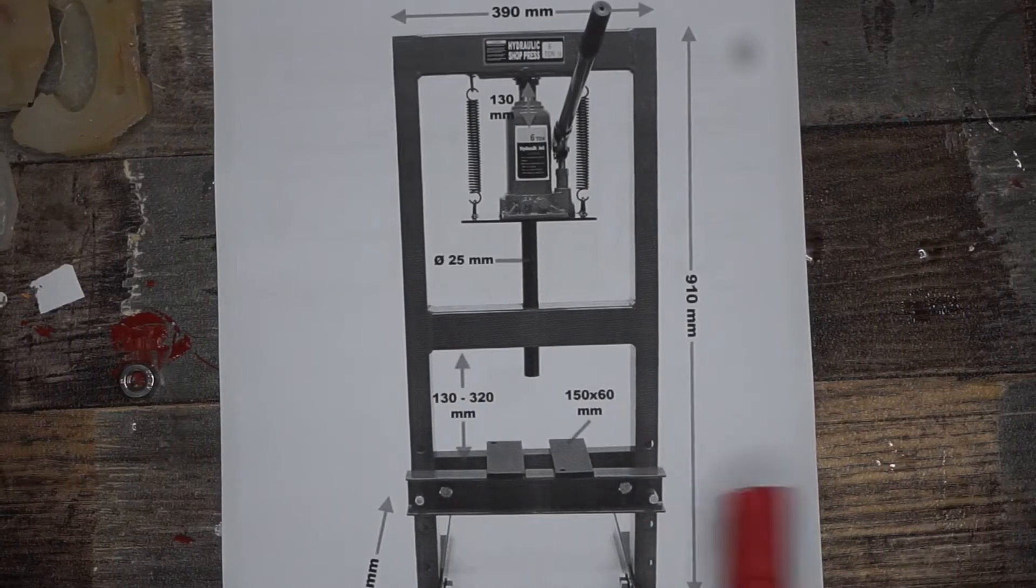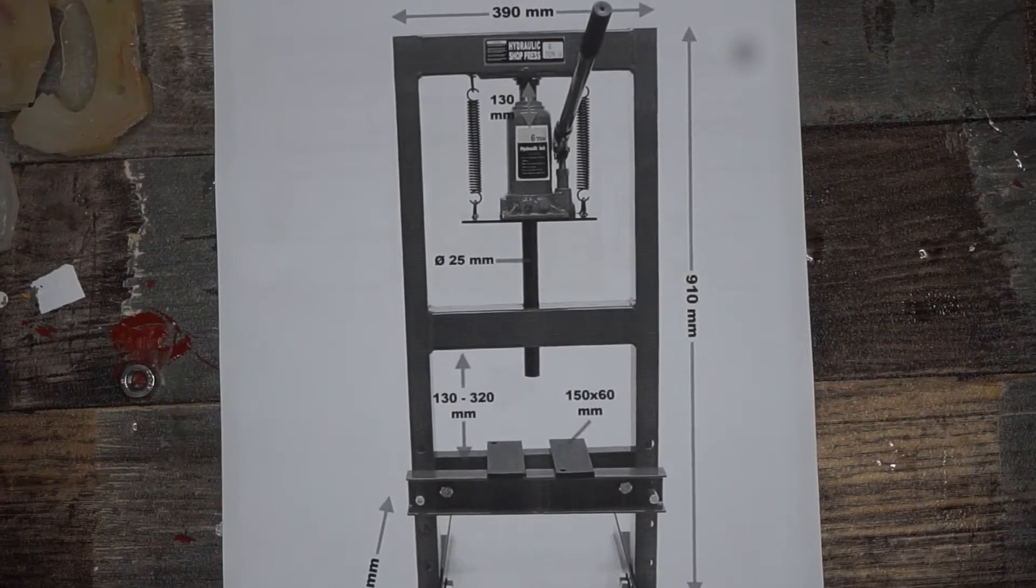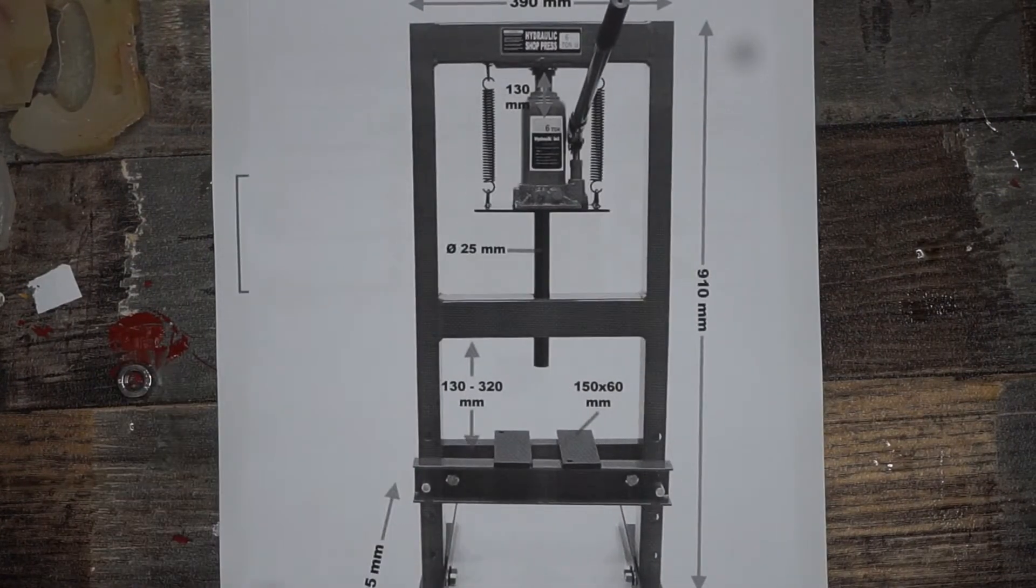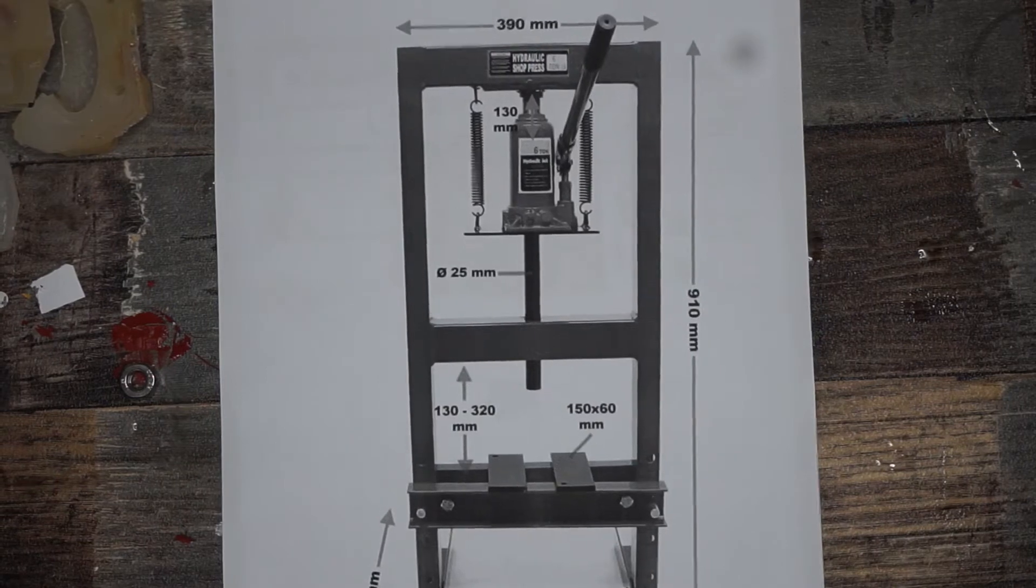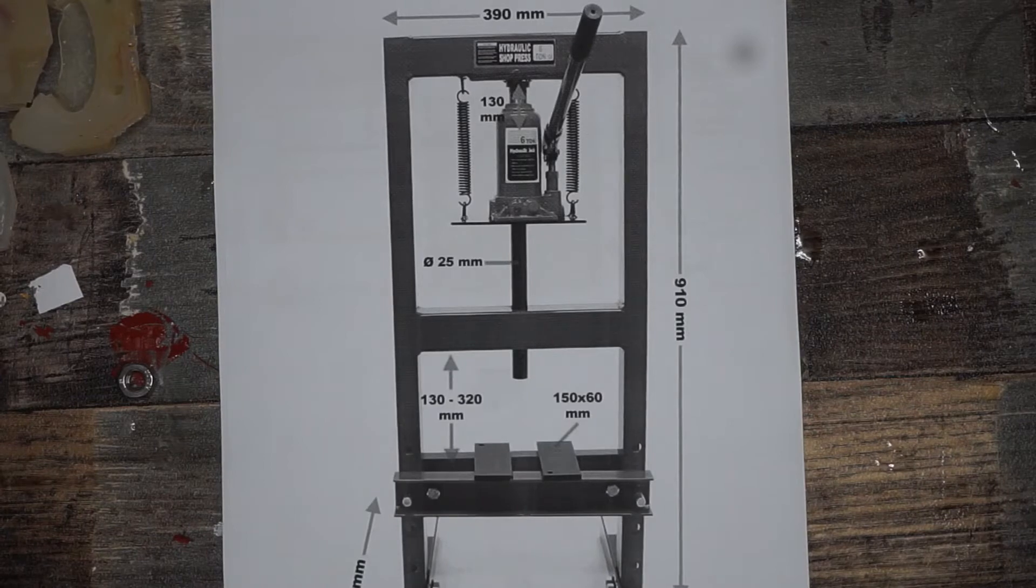Welcome back. Today we are going to check out the hydraulic press for the injection molding machine and how and where to mount the heat block to it. It starts out quite simple.